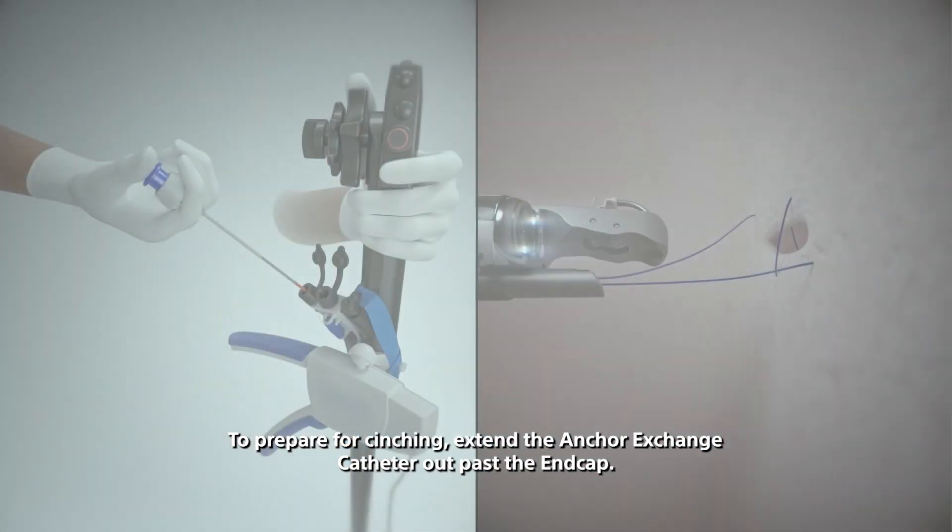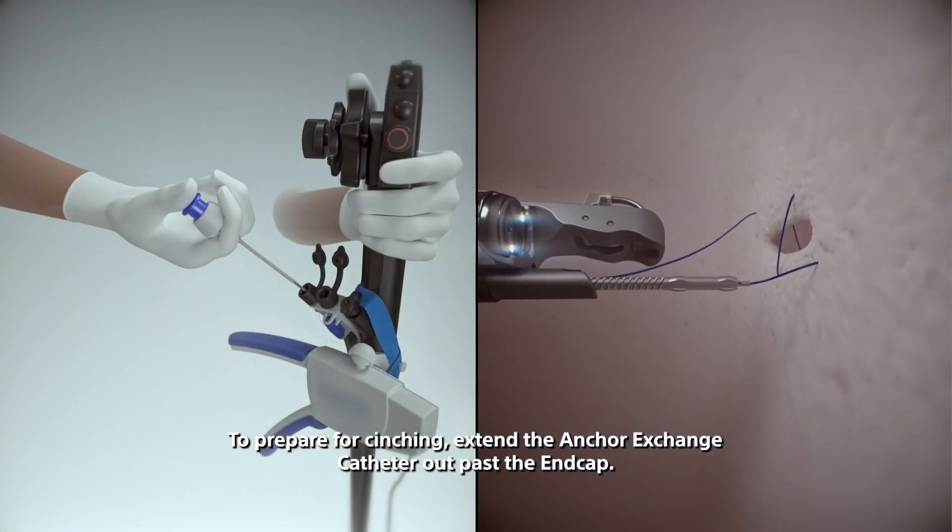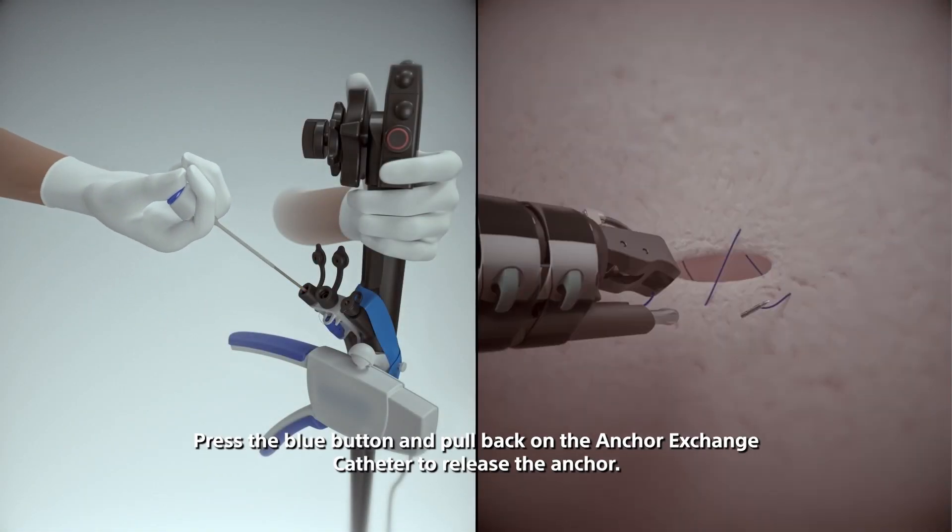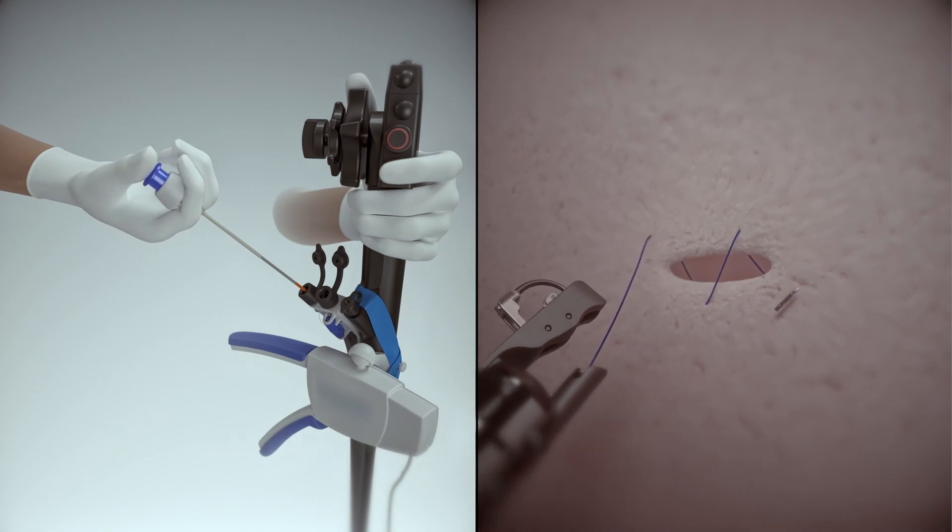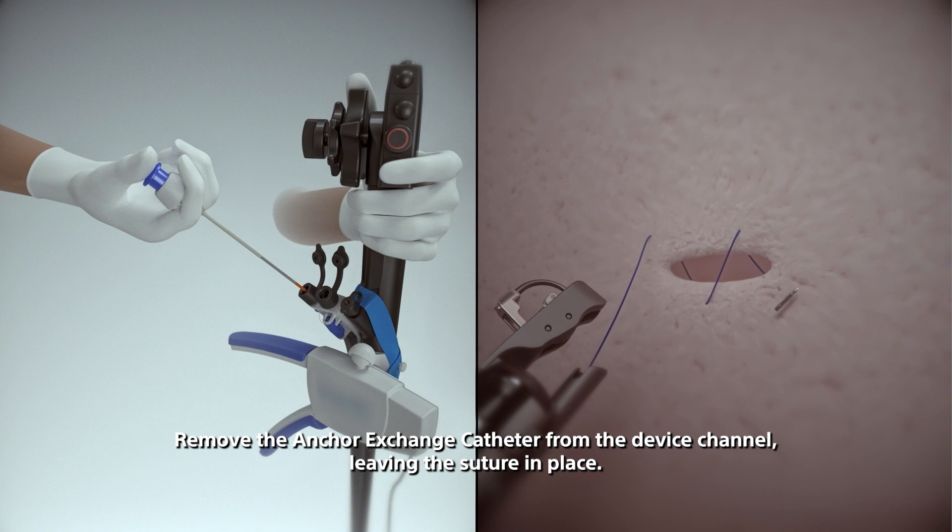To prepare for cinching, extend the anchor exchange catheter out past the end cap. Press the blue button and pull back on the anchor exchange catheter to release the anchor. Remove the anchor exchange catheter from the device channel leaving the suture in place.